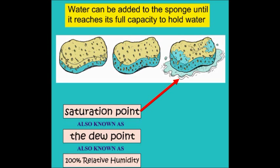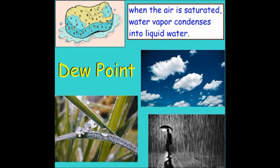The saturation point is also known as the dew point, or 100% relative humidity. When the air is saturated, water vapor condenses into liquid water, and this is the point when clouds form, when dew can form on grass and other substances, and also when rain forms.